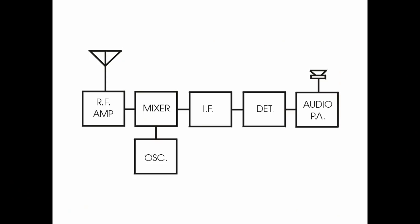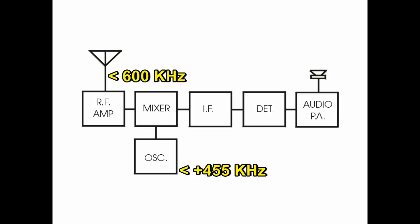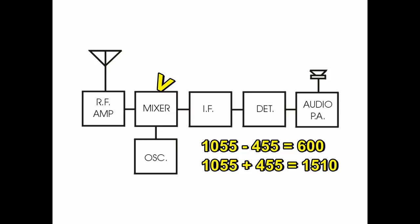In order to understand a little about software-defined radios, we need to go back 100 years to the early superheterodyne days. A local oscillator in the radio was mixed or heterodyned with incoming signals, creating an intermediate frequency, or IF. On AM broadcast receivers, that frequency was 455 kHz, and the oscillator operated 455 kHz above the desired frequency. So, if you wanted to receive 600 kHz, the local oscillator ran at 600 plus 455, or 1055 kHz.